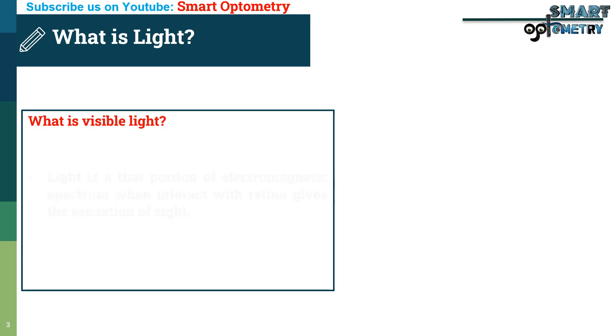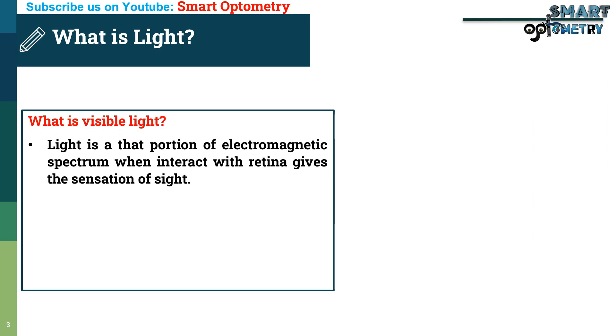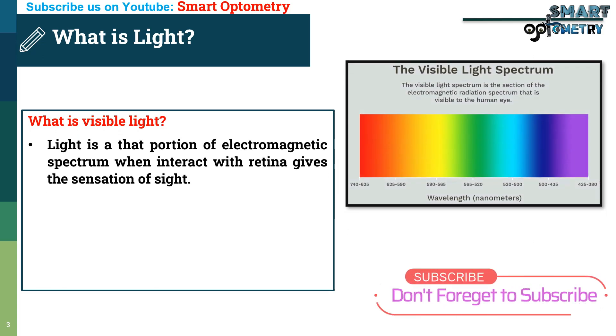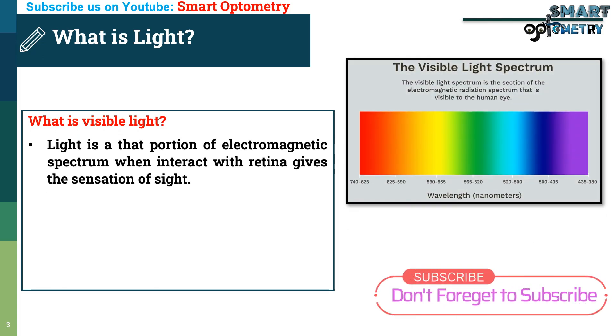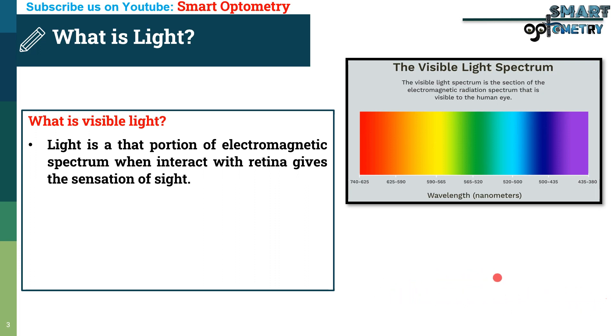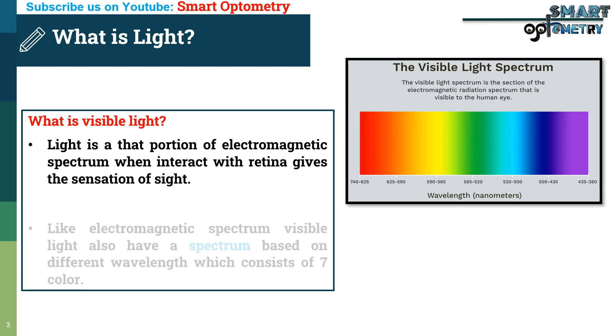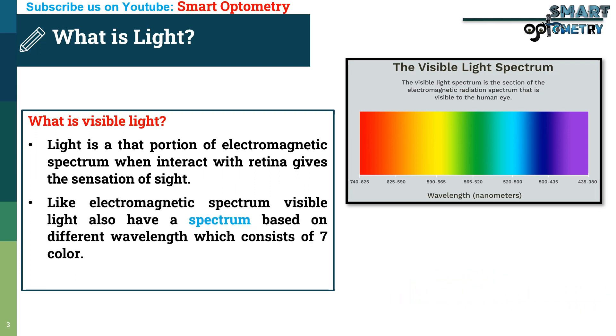So what is light? Light is that portion of the electromagnetic spectrum which, when it interacts with the retina, gives the sensation of sight.